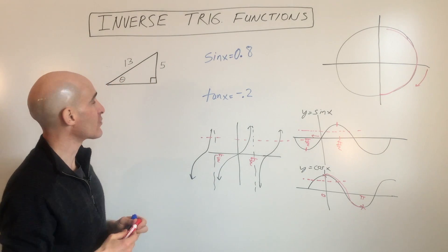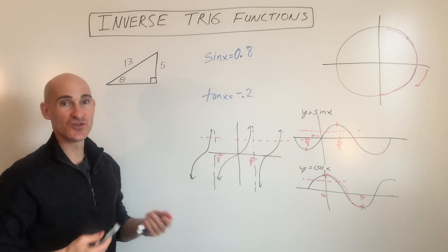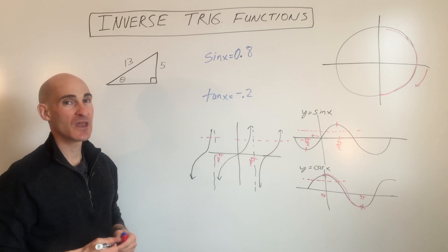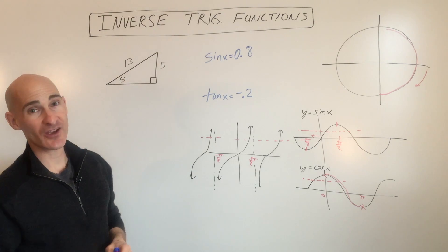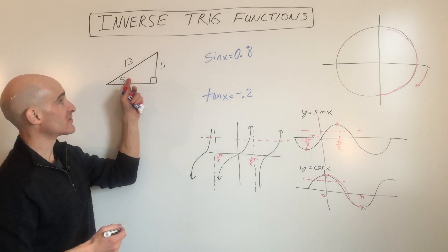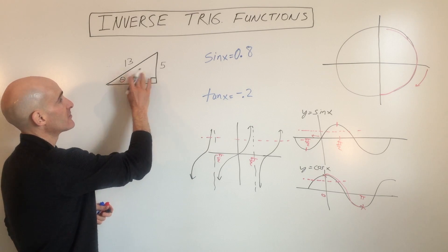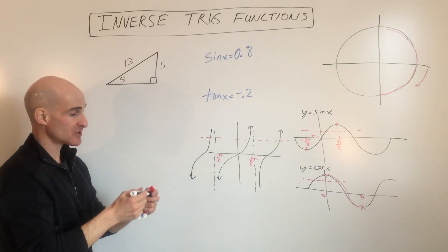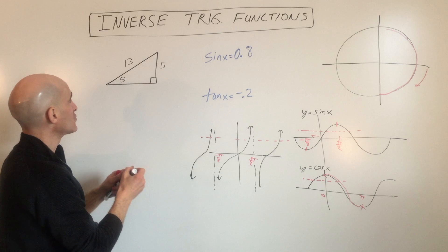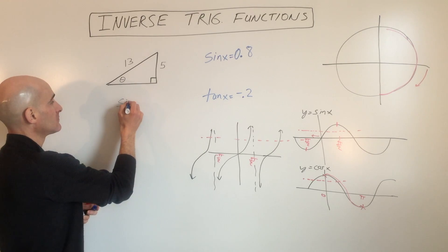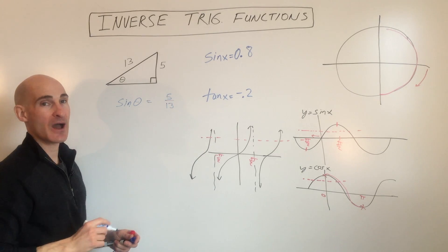So let's take a look at some problems. Why would you even need to use the inverse trigonometric functions? Use the inverse trig functions whenever you're trying to solve for a missing angle. So if we want to find out what this angle is, we ask: what trig function ties together the opposite side and the hypotenuse? That's going to be sine. So we say sine of theta equals opposite over hypotenuse.